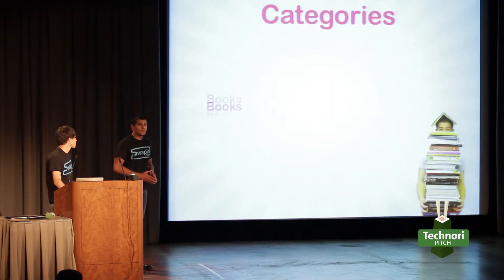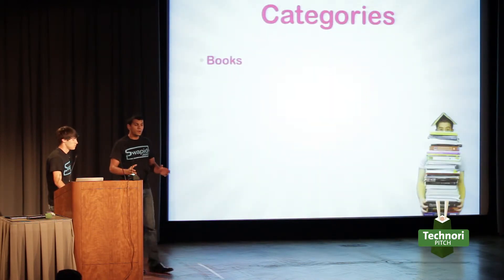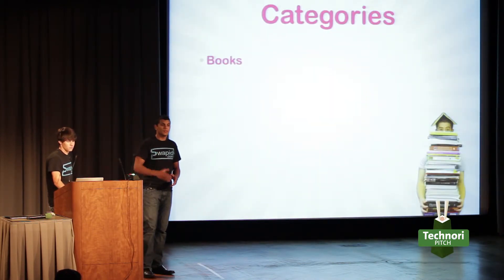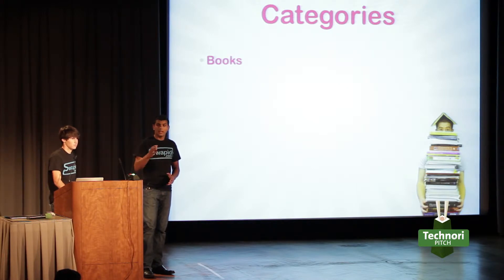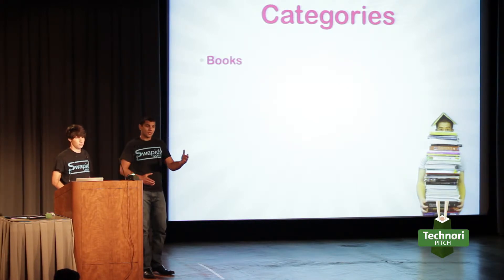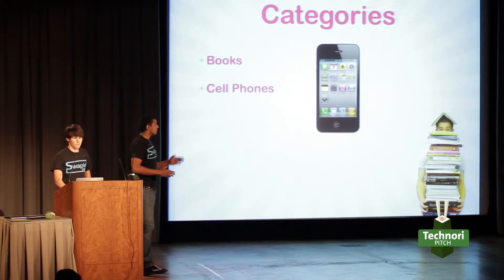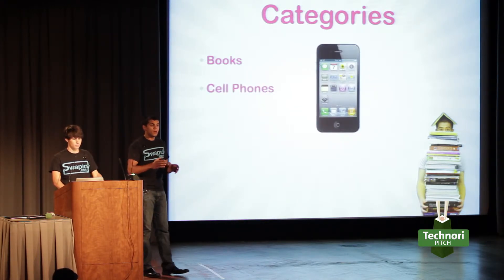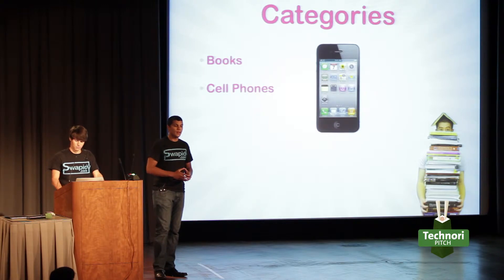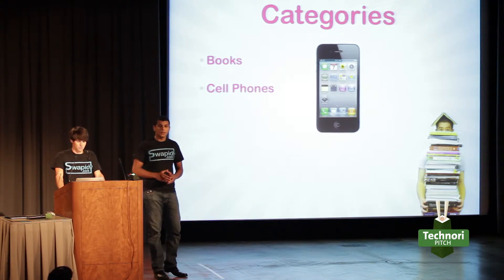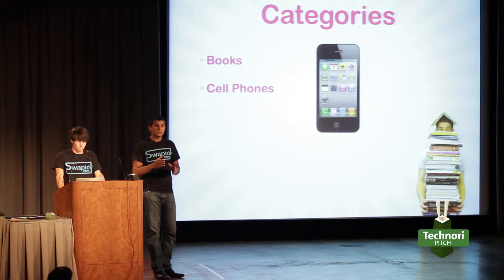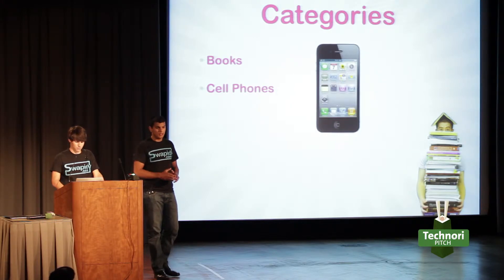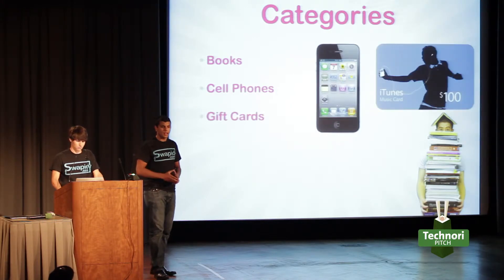The current categories we're doing include books — think about college students. Instead of buying those expensive textbooks, they can easily trade them with other college students. We're also doing cell phones. Think about all the latest, hottest cell phones that come out every single month. Instead of extending your contract for two years, simply trade your current one immediately. Why wait for that contract to be over?